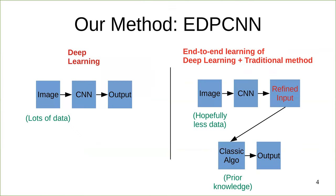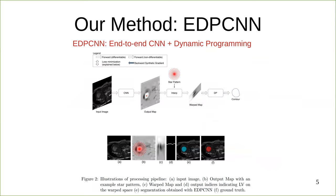We introduce our method of combining CNN and a classical computer vision algorithm. Instead of letting the CNN directly predict the output, we let the CNN output serve as input into a classical computer vision algorithm. This algorithm will then predict the final output. This creates a combination model of CNN plus classical algorithm, which we then train end-to-end using supervised learning. In our work, we combine U-Net with the active contour algorithm mentioned previously.